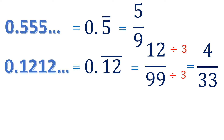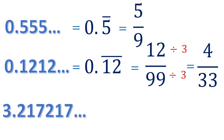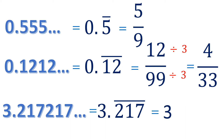If the decimal involves a whole number, the process is the same. For example, 3.217 bar — where 217 is repeating — we copy the whole number and follow the same process: copy the repeating number on top and put three 9s at the bottom because there are three digits in the numerator. This cannot be reduced, so 3.217 bar as a fraction is 3 and 217/999.